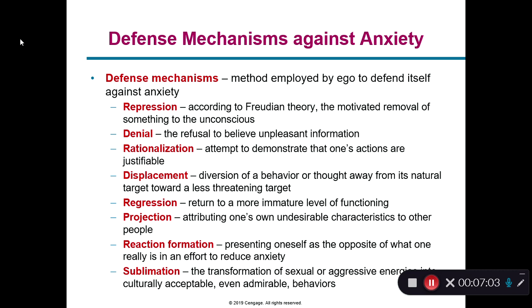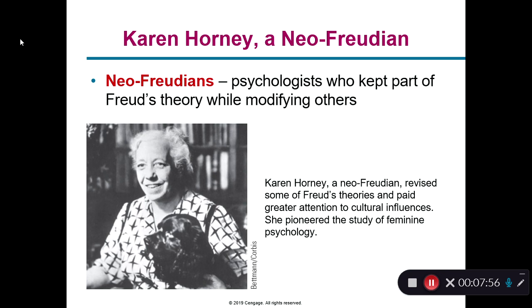Regression is when you return to a childhood state. Projection is when you put your emotions onto somebody else and blame them — like if someone says you're angry and you say, no, you're angry. Reaction formation is presenting oneself as the opposite: if your drive tells you to walk up and kiss someone you just met, reaction formation stops that inappropriate behavior and causes you to act differently instead. Sublimation is transforming these impulses into something that's culturally acceptable.